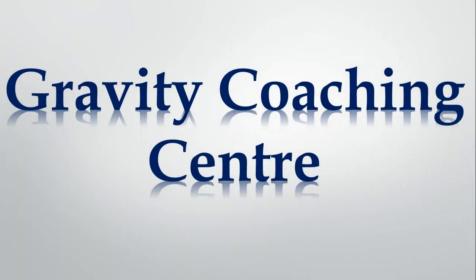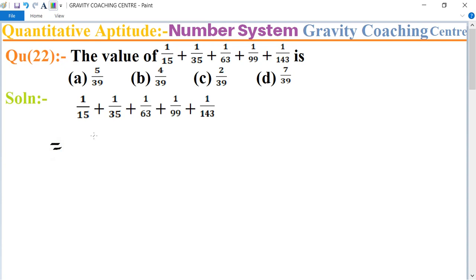Welcome to our channel, Gravity Coaching Center. First of all, we split the denominator: 15 is 3×5, 35 is 5×7, 63 is 7×9, plus 1 upon 99 is 9×11, plus 1 upon 11×13.